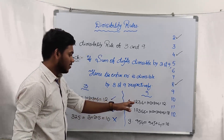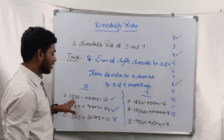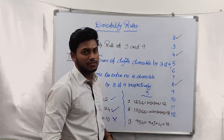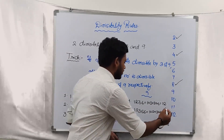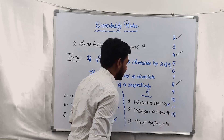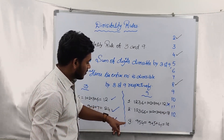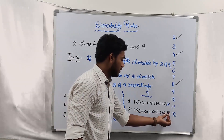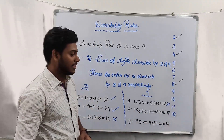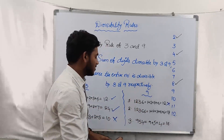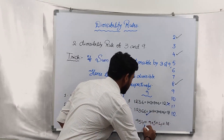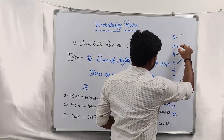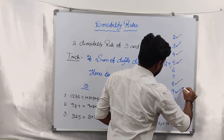In the similar way, you can also check for divisibility by 9. For 1236, the sum of the digits is 12, but 12 is not divisible by 9, so this number is not divisible by 9. For a few other numbers where the sum of digits equals 18 — since 18 is divisible by 9, hence those entire numbers are also divisible by 9. By this, we have covered 3 and 9.